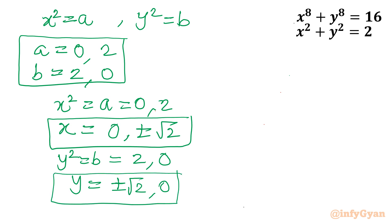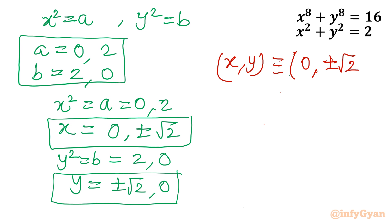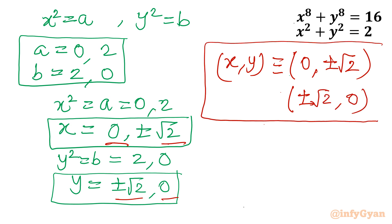We get two sets from x = 0: (x, y) = (0, +√2) and (0, −√2). And two sets from y = 0: (x, y) = (+√2, 0) and (−√2, 0). So there are four sets of solutions for this given system of equations.